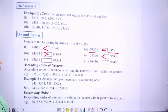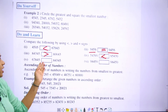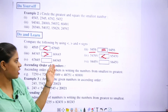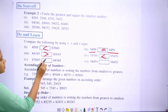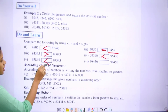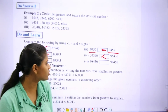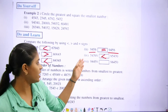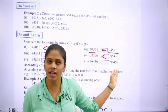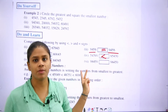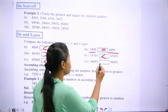Move to the next one. Sixty-seven thousand eight hundred forty-five and eighty-four thousand three hundred forty-five — eighty-four thousand three hundred forty-five is bigger. Move to the next one. 98,450 and 98,450 — they both are equal, we put the equals to sign.